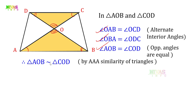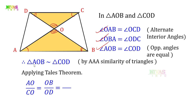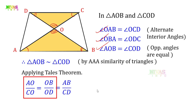These two similar triangles are proved. You can apply AO by CO equals OB by OD equals AB by CD. So we can reverse this: OA by OC equals OB by OD. Just reverse. So OA by OC equals OB by OD. The theorem is applied and this is the proof. OA by OC is equal to OB by OD.